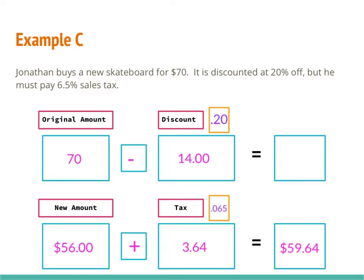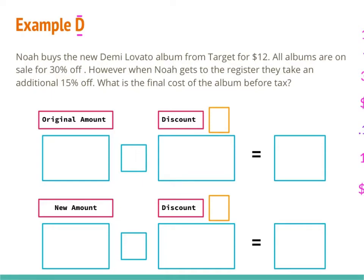Example D says Noah buys the new Demi Lovato album from Target for $12. All albums are on sale for 30% off. However, when Noah gets to the register, they take an additional 15% off. What is the final cost of the album before tax? I've laid out six boxes because I'm going to be finding two different discounts. The original amount is $12. Since it's a discount, that's subtraction, and my first discount is 30%, or 0.30 as a decimal. I multiply 12 times 0.30 and get $3.60. Then 12 minus $3.60 gives me $8.40.